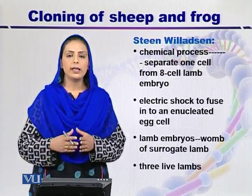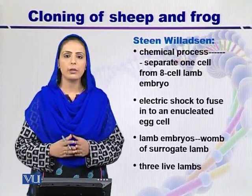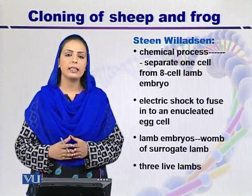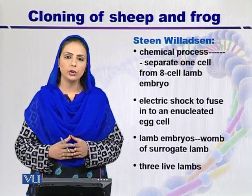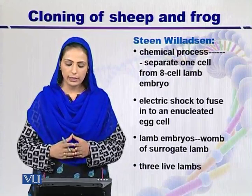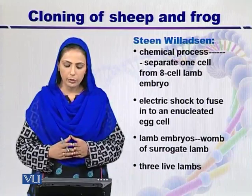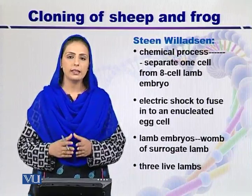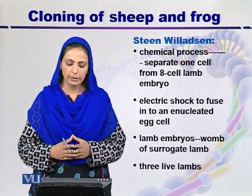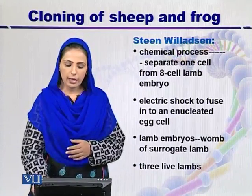Steen Willadsen used a chemical process to separate one cell from an 8-cell lamb embryo, and later used an electric shock technique to introduce this cell into an enucleated egg cell. From this, they developed two lamb embryos which were then inserted into the womb of a surrogate lamb mother, giving birth to three live lambs.